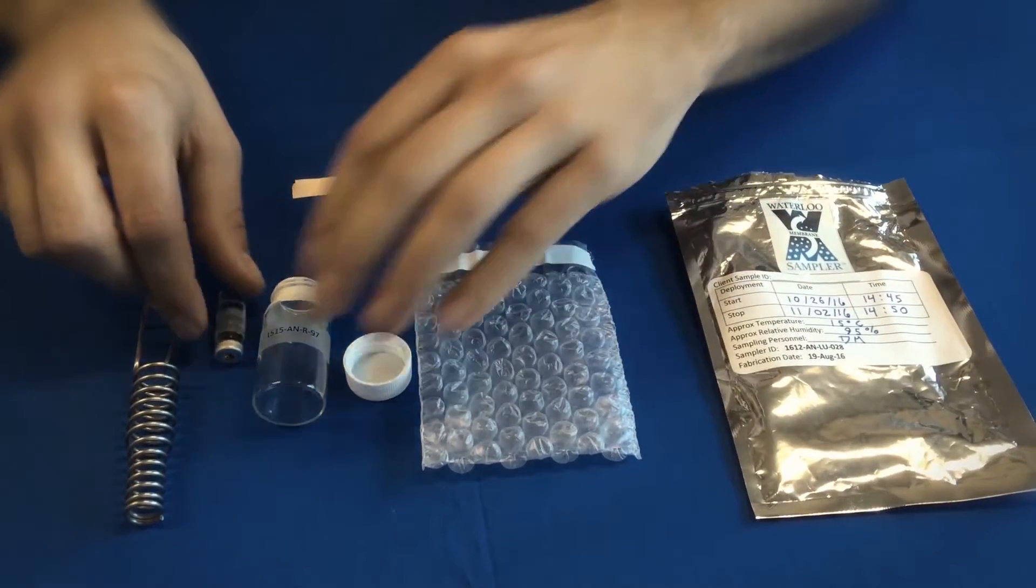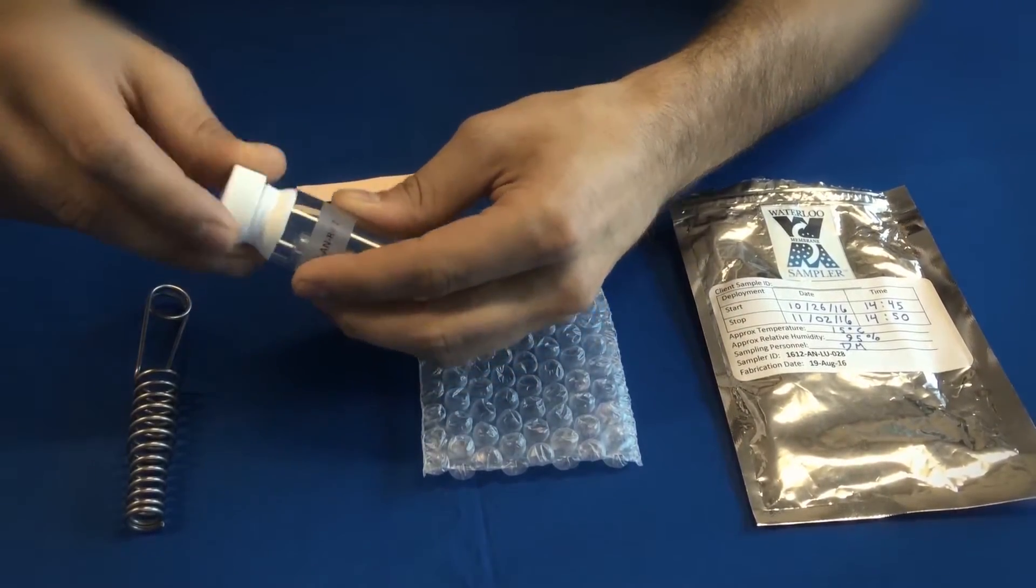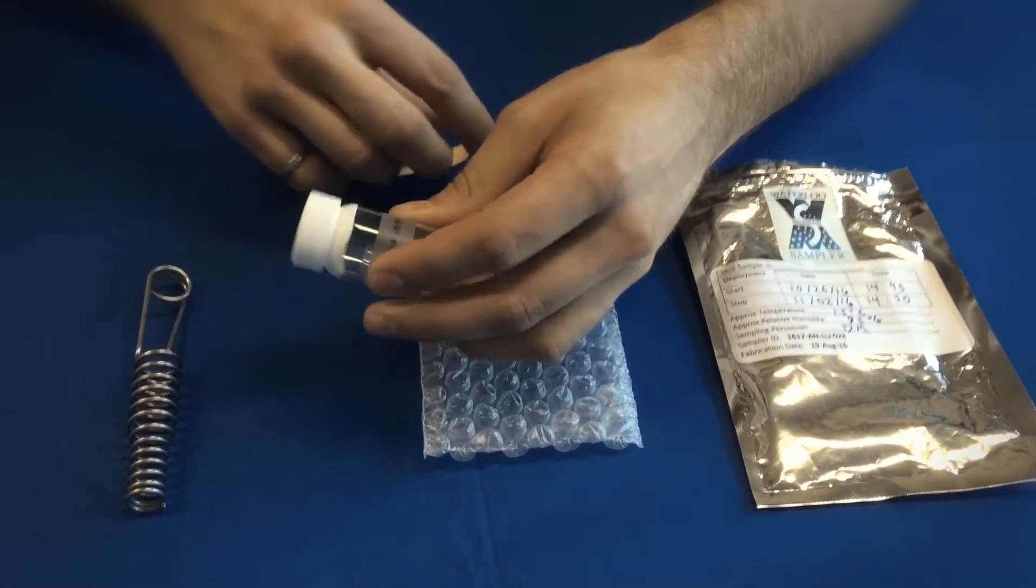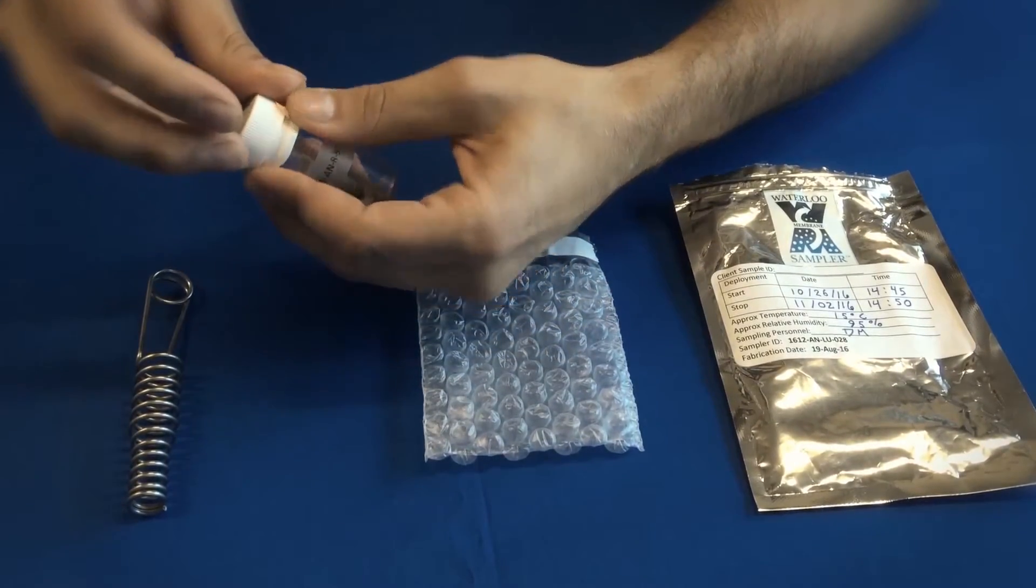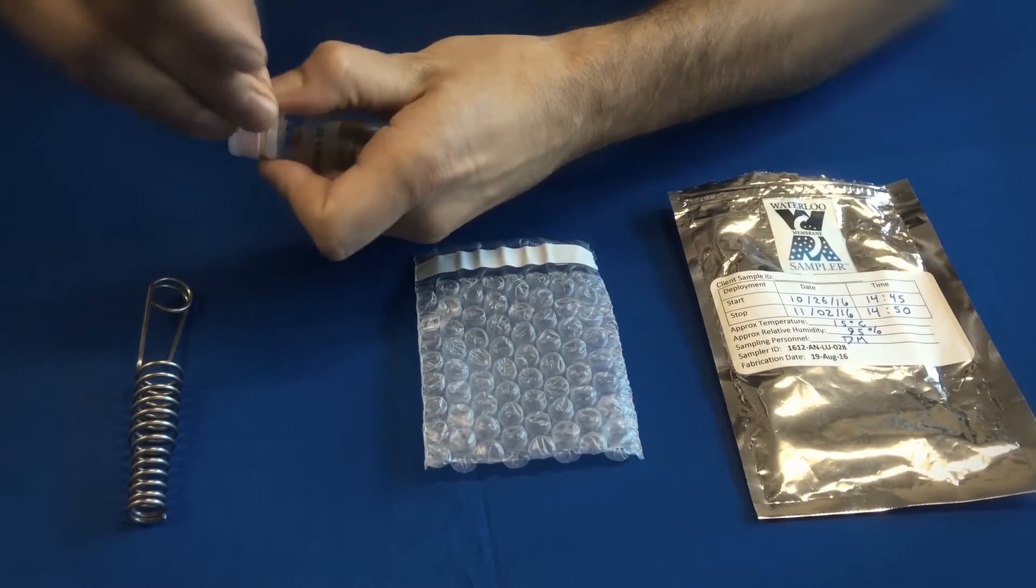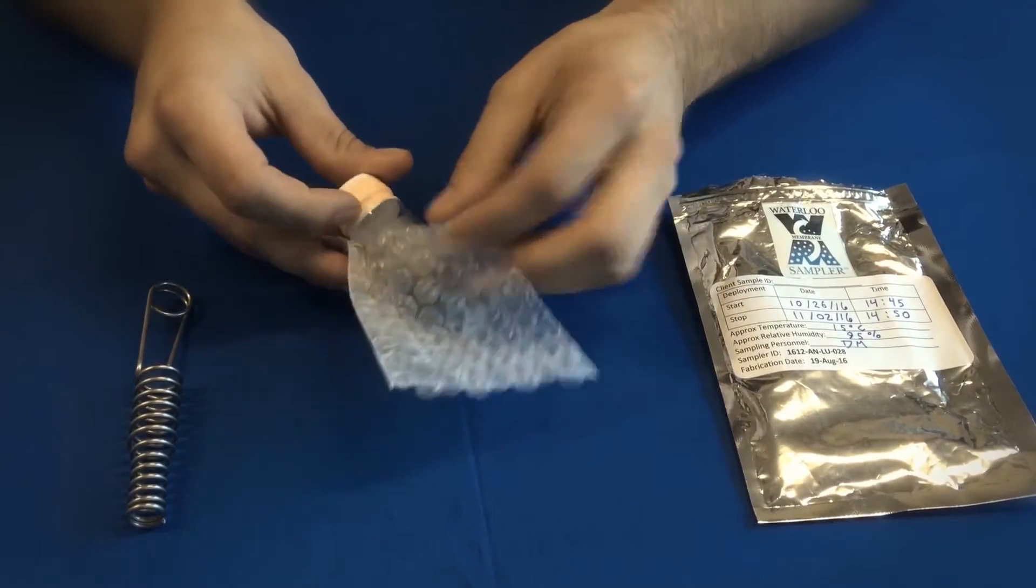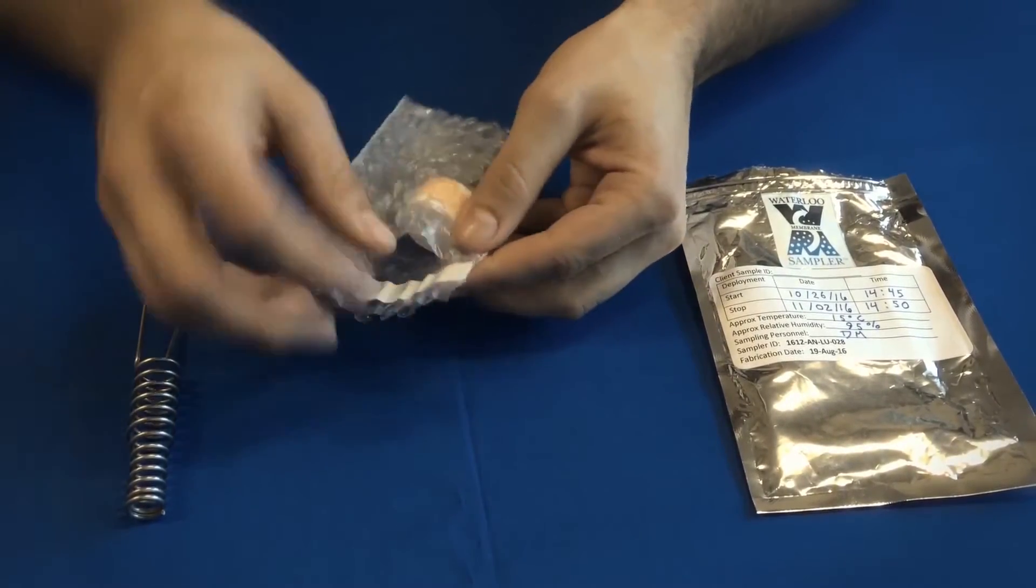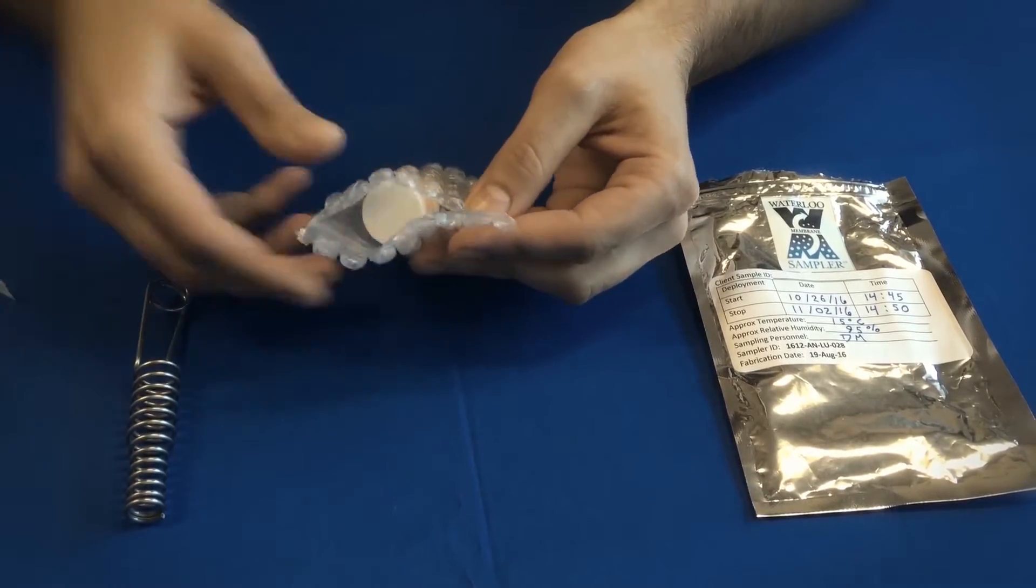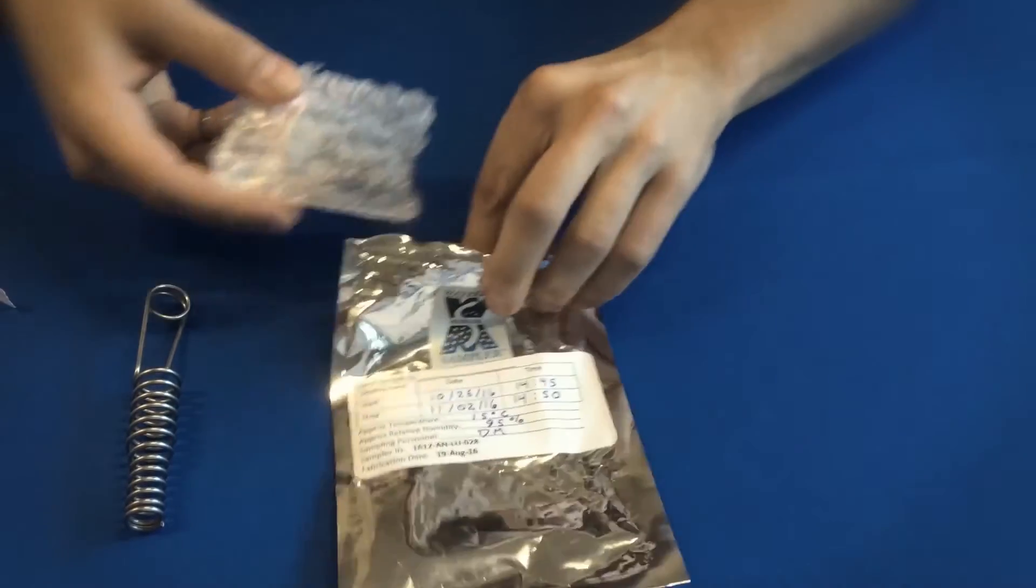Return the sampler to the glass vial, seal the cap with Teflon tape, and put the vial in the bubble bag. Then put this in the aluminum pouch.